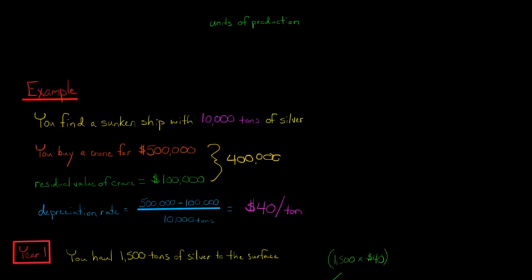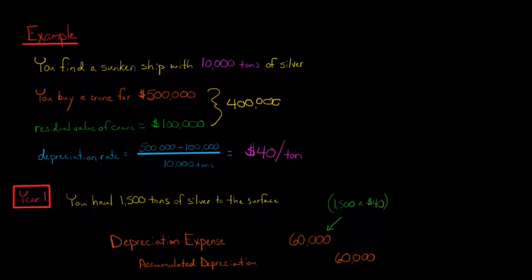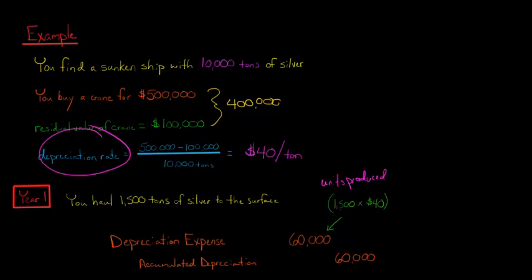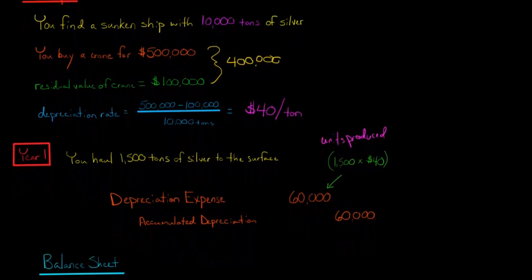Let's pretend we recover 1,500 tons of silver in year one. To figure out how much depreciation we take, we debit depreciation expense and credit accumulated depreciation. We take the 1,500 units produced and multiply by our depreciation rate of $40 a ton, which gives us $60,000. So we debit depreciation expense for $60,000 and credit accumulated depreciation for $60,000.